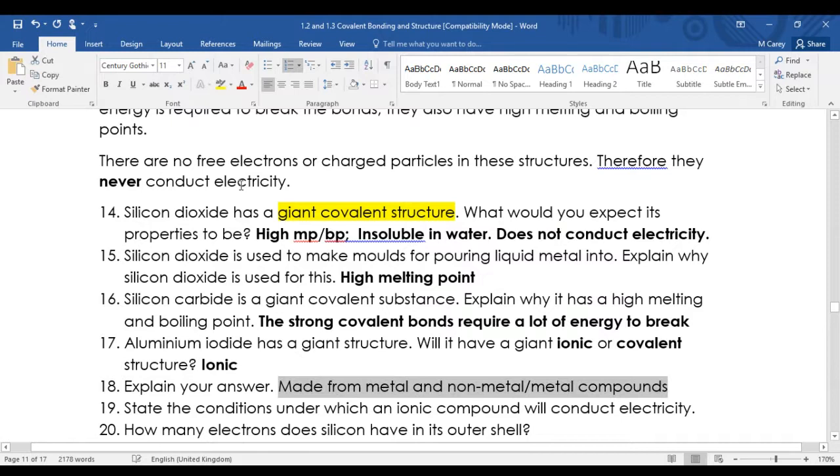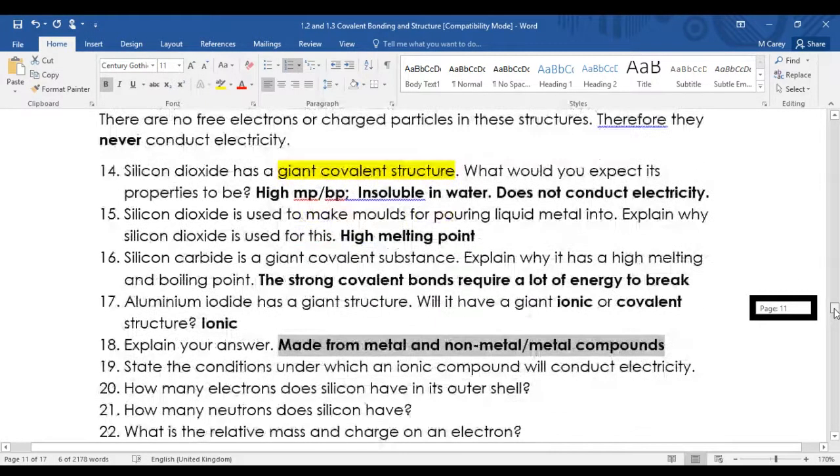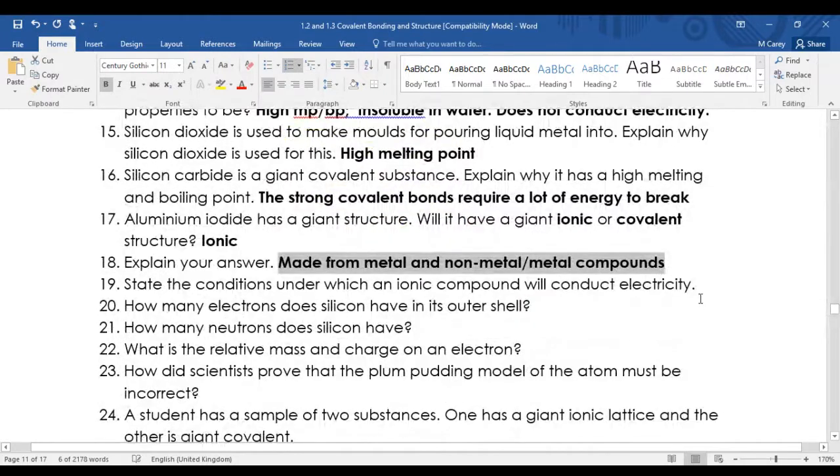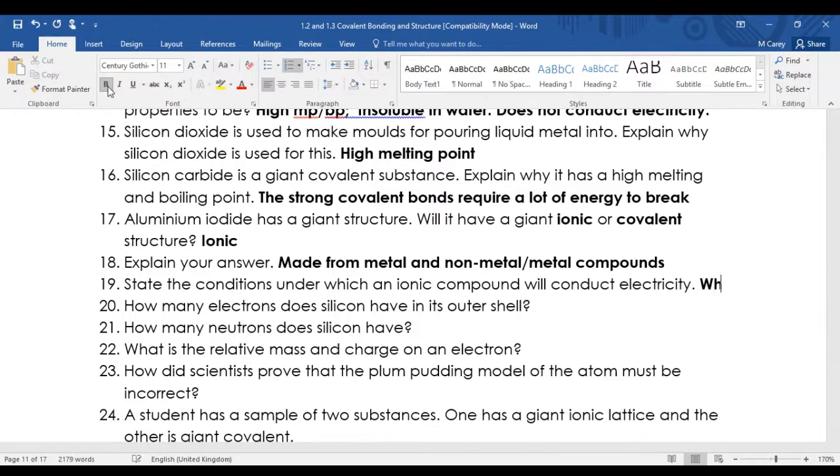Everything metal non-metal will be ionic. State the conditions under which an ionic compound will conduct electricity. So this is just stating that when it is molten or aqueous.